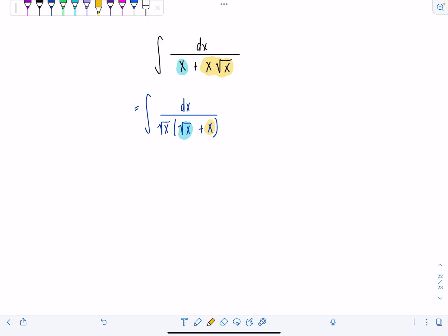What's the point of doing that? I'm getting ready to make a u substitution. So we're going to let u equal square root of x. That means du is 1 over 2 radical x dx.